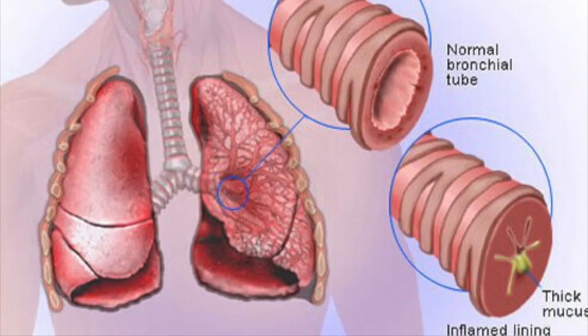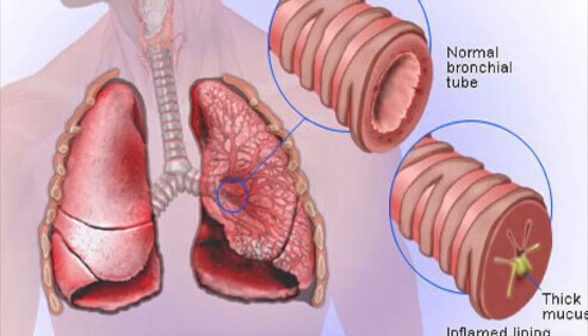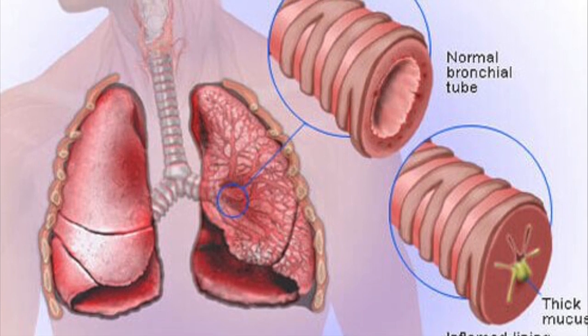Today I'm going to be talking about bronchitis, more specifically chronic bronchitis, and I'm going to start off with the definition. Bronchitis is an infection of the bronchial tubes that lead to the lung — basically an overproduction of mucus in the bronchial tubes — and they block airway passages.